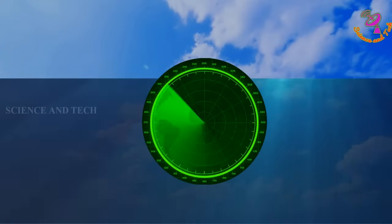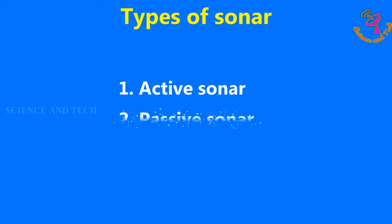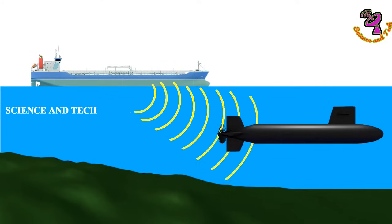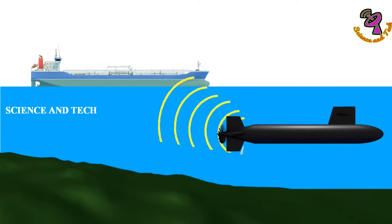Sonar is classified into two types: active sonar and passive sonar. Active sonar spreads sound waves and then absorbs the reflected echo. It has two major parts.